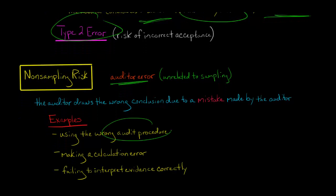Maybe the auditor used the wrong audit procedure. It's also possible the auditor just calculated some numbers incorrectly. A lot of this is done with a spreadsheet, but sometimes people make a mistake with a formula. If you have some kind of error and you end up concluding something is overstated or not overstated due to a formula mistake, or if they have appropriate evidence but just don't know how to interpret it — these are all non-sampling errors.